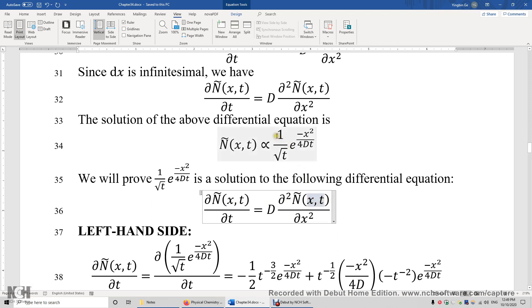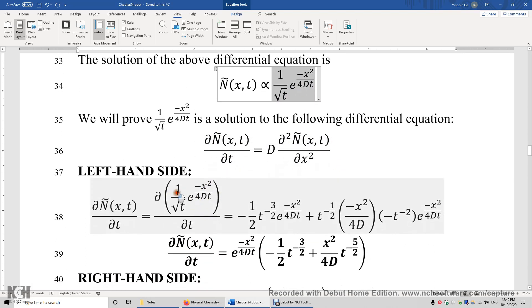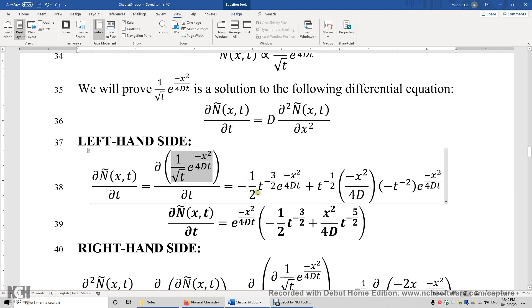So first, let's plug in this expression in the left-hand side. So plug in here. This is a function of time. We just need to take the first derivative of this function. The steps can be tedious, but I'm showing you the result here. The result is this exponential function times this function of time and position.